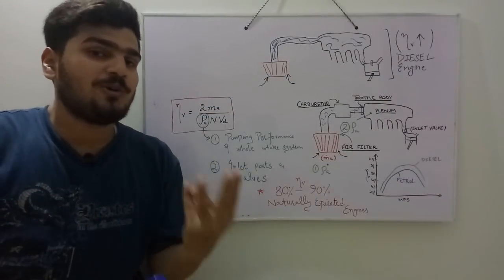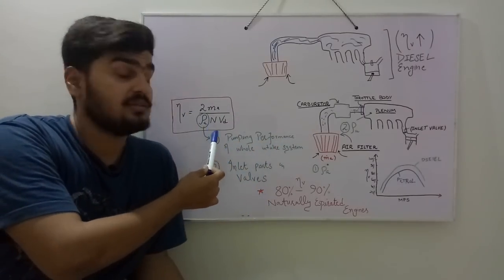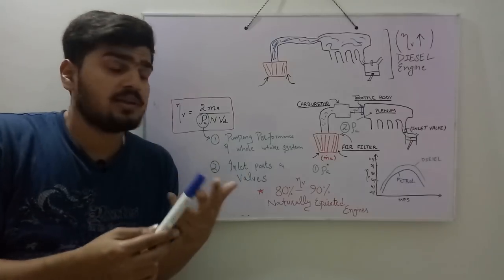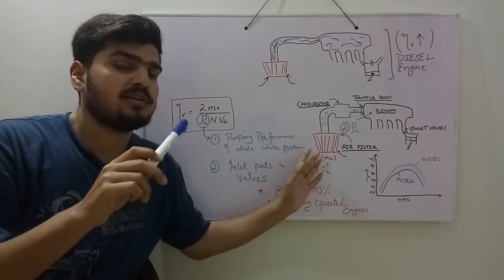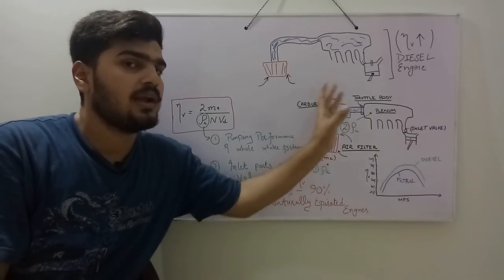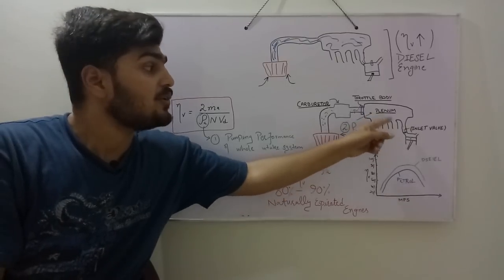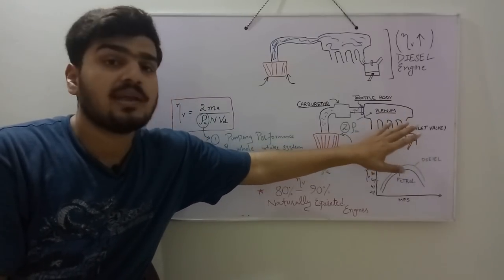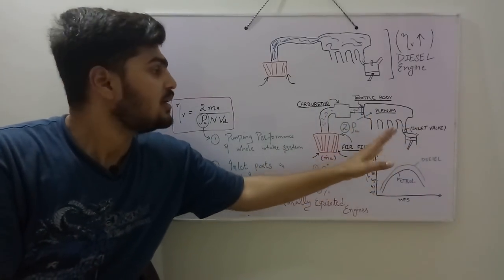Next I want to explain the three most important points in this topic. The first one is about the inlet air density, which appears in the formula for volumetric efficiency. There are two common cases: if you are measuring the inlet air density from outside of the air filter at atmospheric pressure and temperature, then you will see the overall pumping performance of the intake system. If you are measuring it from the inlet manifold, then you will only see the pumping performance of your inlet valve and inlet port, as the inlet valve also produces some restriction to airflow.